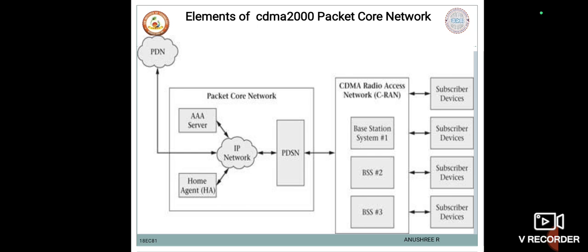The AAA — Authentication, Authorization and Accounting — server both authenticates and authorizes the subscriber device to employ the available network services and applications. The AAA server manages a database containing user profiles, including quality of service information for the PDN. It also receives accounting information from the PDSN node that, together with session information, can be used for billing the subscriber. In the CDMA 2000 system, the Home Agent has the task of forwarding all packets destined for the subscriber device to the PDSN over an IP network, and the PDSN then sends the packets to the subscriber device through the CRAN and the common air interface.